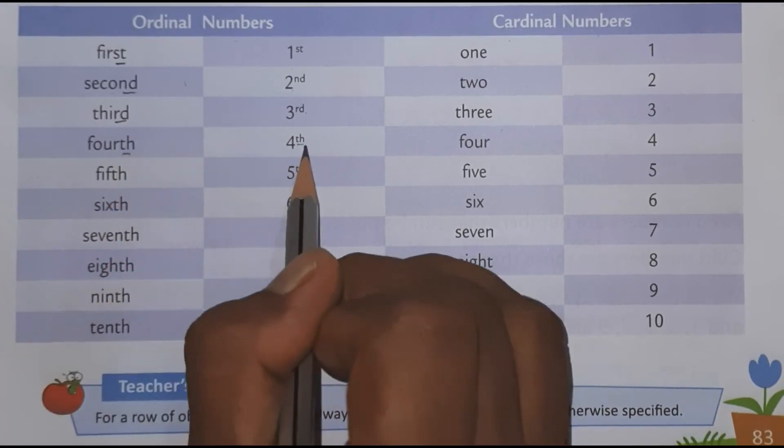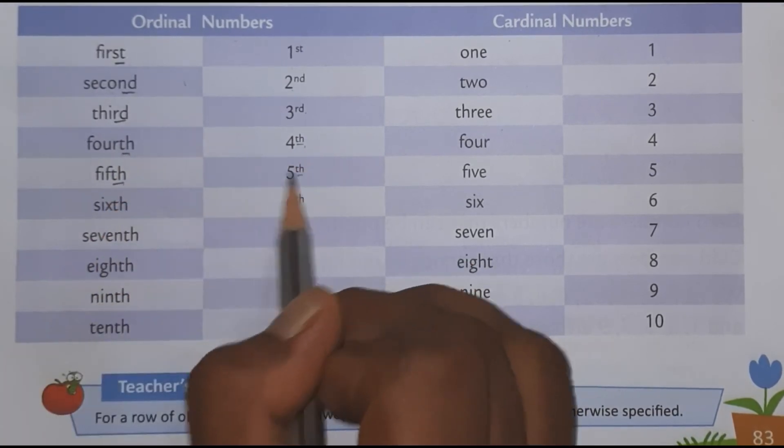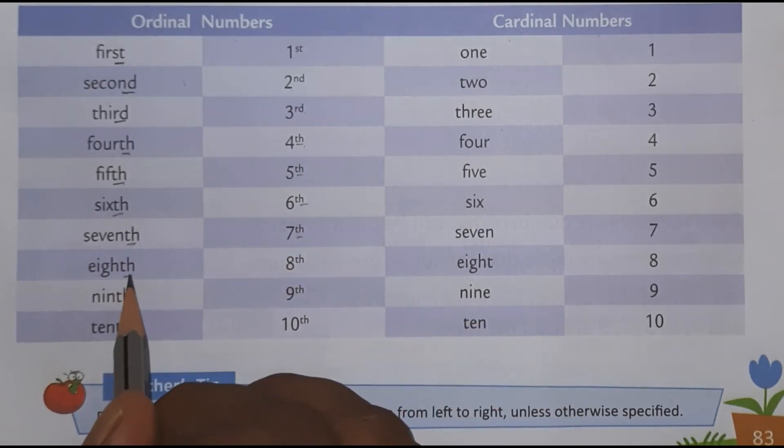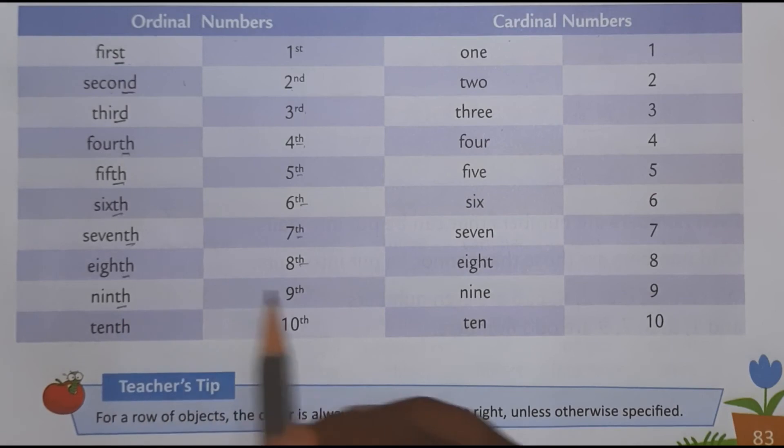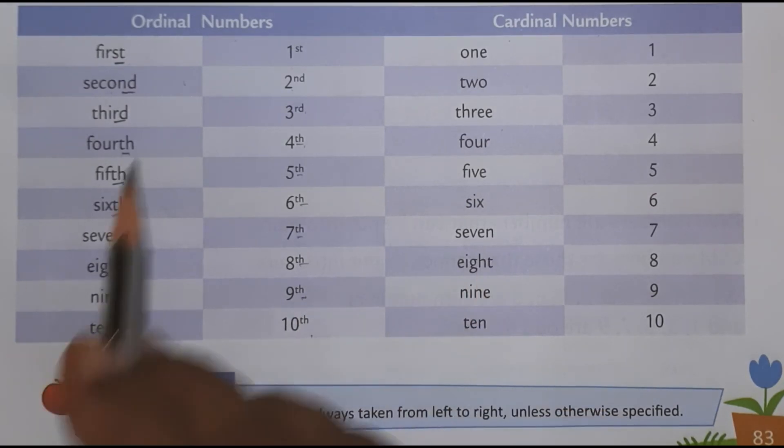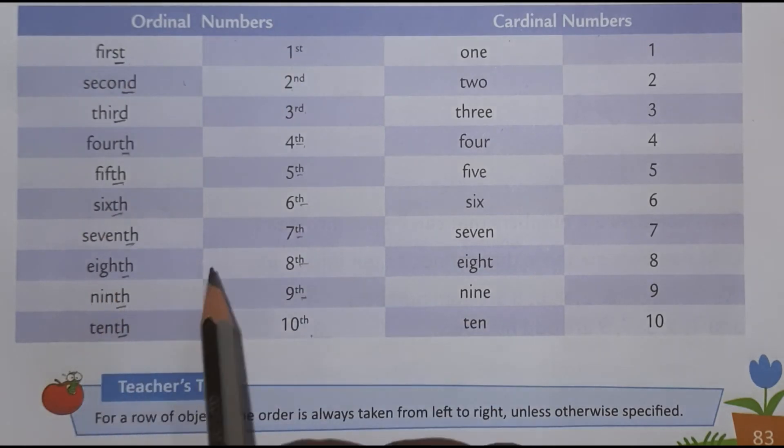Fourth, fourth, fifth, sixth, seventh, eighth, ninth, tenth. So like this we have to write ordinal numbers.